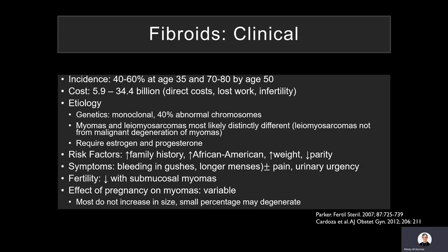Turning first to the clinical aspects of fibroids: the incidence of fibroids is significant in the female population and increases with increasing age during the reproductive years. The cost estimated related to the complications of fibroids is significant in our population. As far as the etiologies go, there are several, but basically the important thing is that they require estrogen and progesterone for growth.